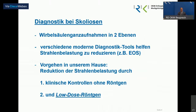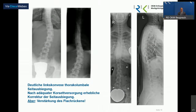Nochmals zur Diagnostik bei Skoliose: Man muss natürlich Röntgenaufnahmen irgendwann mal machen, aber es geht mir darum, auch zu zeigen, wie man Röntgen sparen kann. Es gibt moderne Diagnostik-Tools wie die sogenannte EOS, wo die Strahlenbelastung im Vergleich zur Computertomographie reduziert werden kann. Wir haben das Gerät hier im Hause nicht, aber wir versuchen Strahlung dadurch zu sparen, dass man zum Beispiel nur über den gebeugten Rücken schaut, kein Röntgenbild macht, und wenn überhaupt im Verlauf röntgt, dann nur mit Low-Dose, also mit deutlich niedrigerer Strahlendosis.